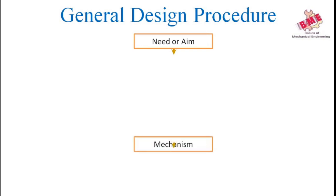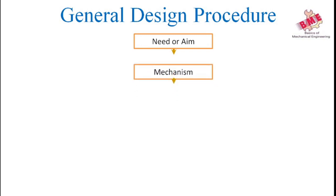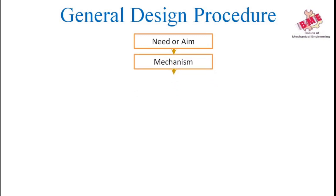The next step is Mechanism. Select the possible mechanism or group of mechanisms which will give the desired motion. We have seen in the theory of machines subject what mechanisms are, and from that we have to select the possible mechanism for the design purpose.